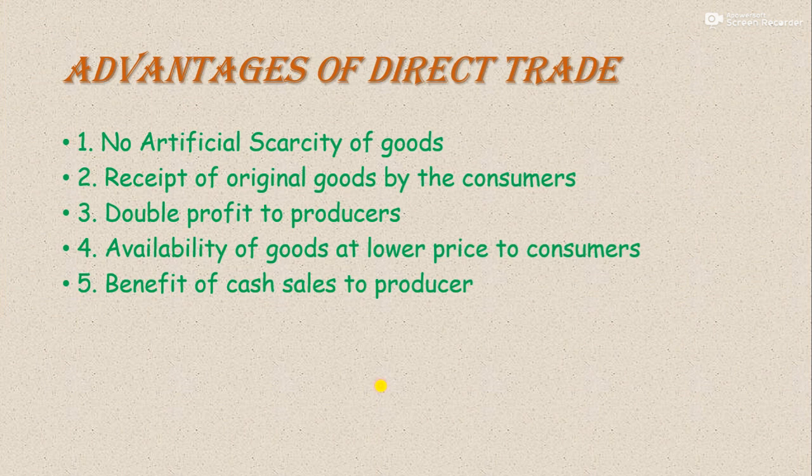Now come to the various advantages of direct trade. First: no artificial scarcity of goods. Kya hota hai? Jo middleman hote hain, woh apni stock mein goods ko hold karke rakh lete hain aur supply ko short kar dete hain. Supply short ho jati hai, demand zyada hoti hai, to automatically goods ke prices increase hone lagte hain. Aisa producer nahi karta — aisa middleman karta hai. Middleman artificial scarcity create kar deta hai.